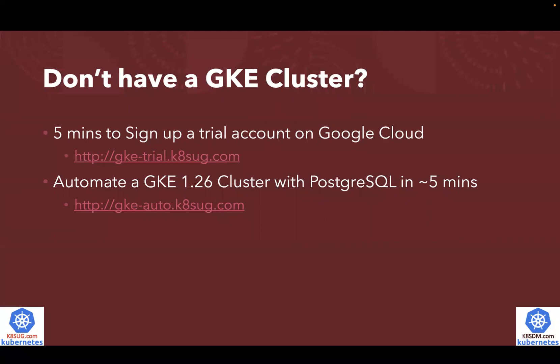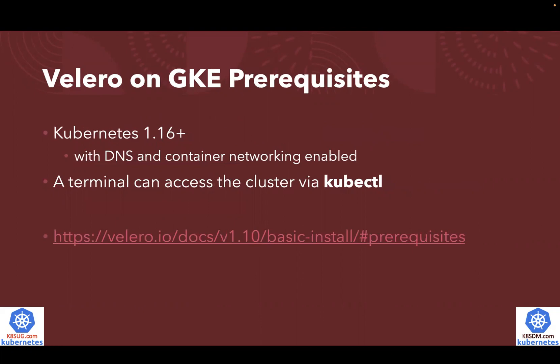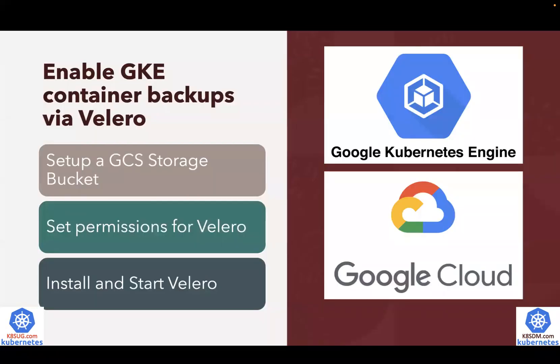Let's get started. If you don't have a GKE cluster, here are two links. First, you need about five minutes to sign up for a trial account on Google Cloud. After you have a trial account, you can automate a GKE 1.26 cluster with a PostgreSQL database deployed in just about five minutes. Once you have a GKE cluster running, here are the prerequisites to enable Velero on GKE. You need Kubernetes cluster version 1.16 or higher with DNS and container networking enabled. Secondly, you need a terminal to be able to access the cluster via kubectl.